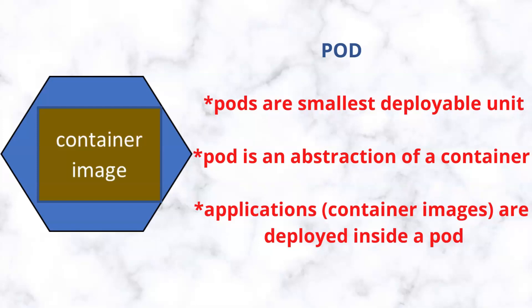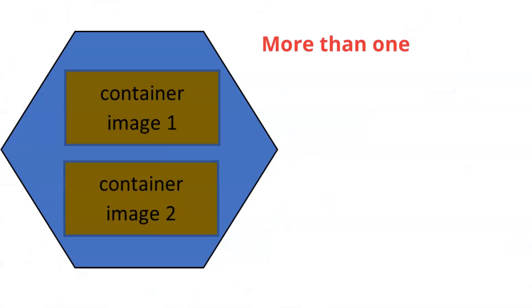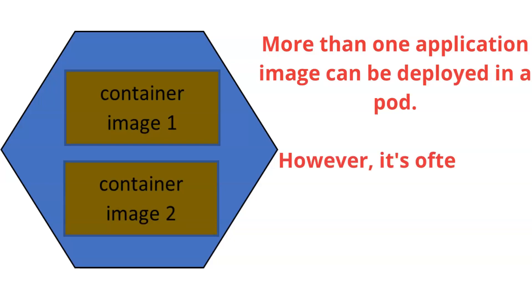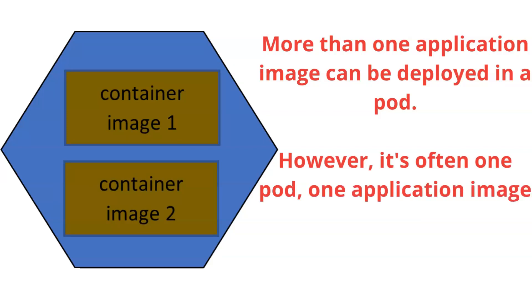Your containerized applications will be running inside a pod. You should also know that you can have more than one container image in a pod — you can have two or three container images in a pod — but usually it's one pod, one container image. In some cases, depending on your deployment, you may choose to have more than one container running in a pod. Now let's talk about the OpenShift architecture.